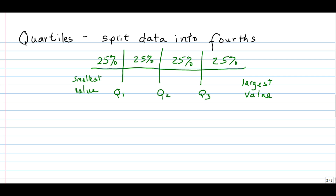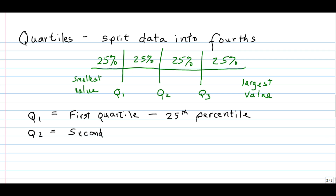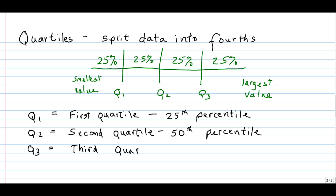Let's call them Q1, Q2, and Q3. The division points between each quarter are referred to as quartiles and are defined as follows: Q1 is the first quartile or 25th percentile; Q2 is the second quartile or 50th percentile, also known as the median; and Q3 is the third quartile, which would be the 75th percentile.